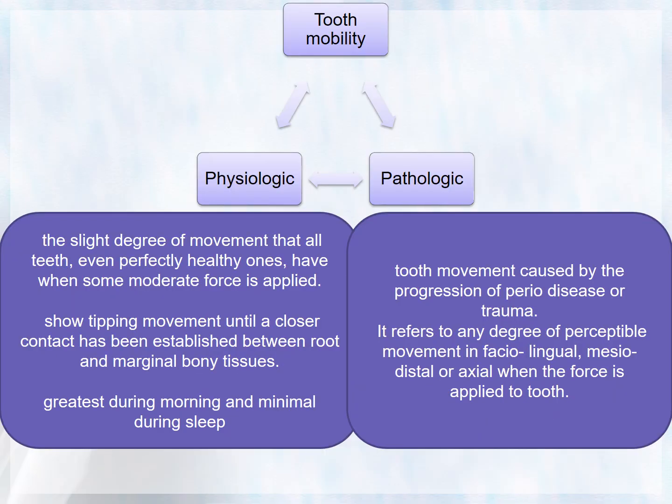Tooth mobility can be of two types: physiologic and pathologic. Physiologic tooth mobility is a slight degree of movement present in all teeth — even perfectly healthy ones have some degree of mobility when moderate force is applied. It may show tipping movement and is greatest during the morning and minimal during sleep. Pathologic tooth mobility is caused by progression of periodontal disease or trauma, and refers to any perceptible movement in the facial-lingual, mesiodistal, or axial direction when force is applied.